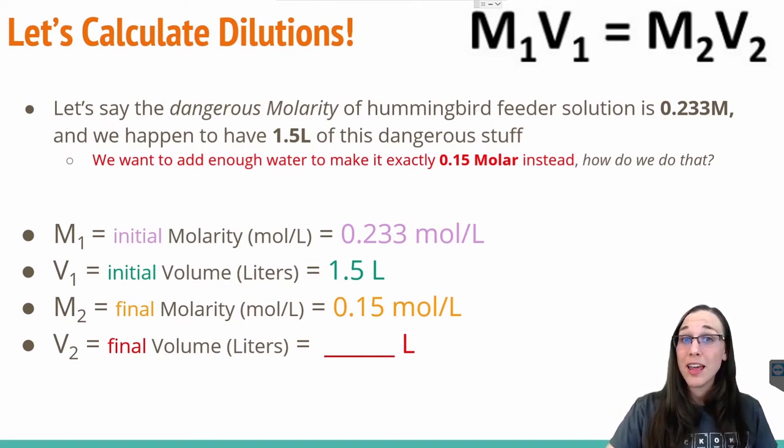In math, whenever there are letters directly next to each other, that means multiply. So when the M and the V are next to each other, that technically means they are being multiplied together. So all we have to do now is plug and chug the values into our equation.